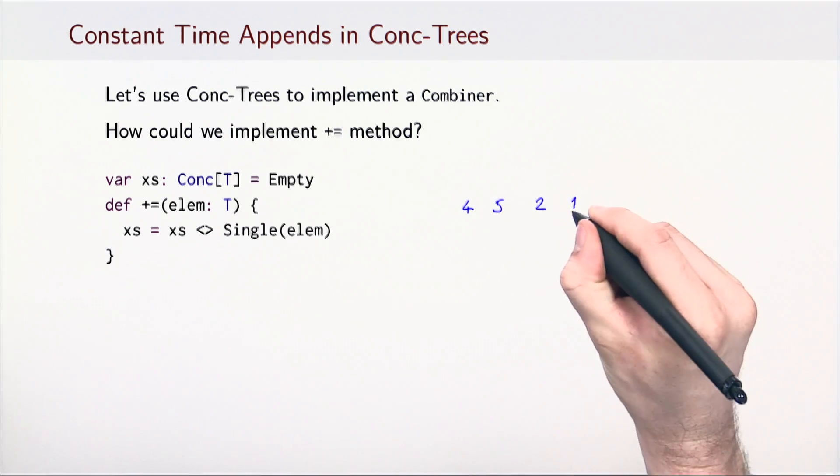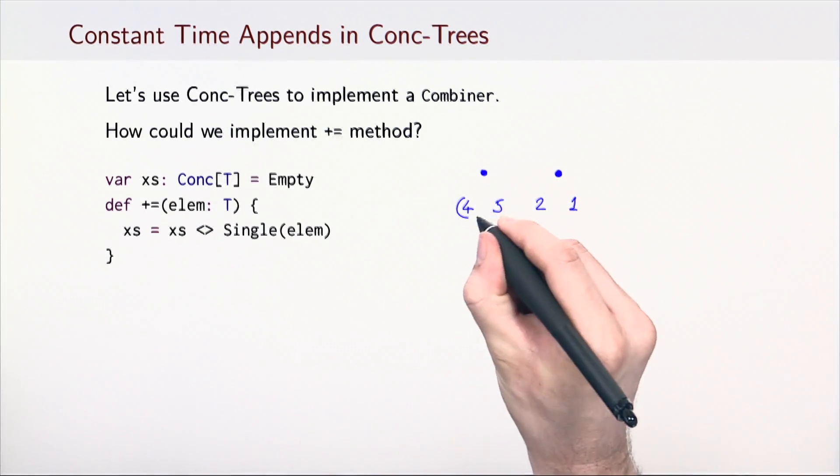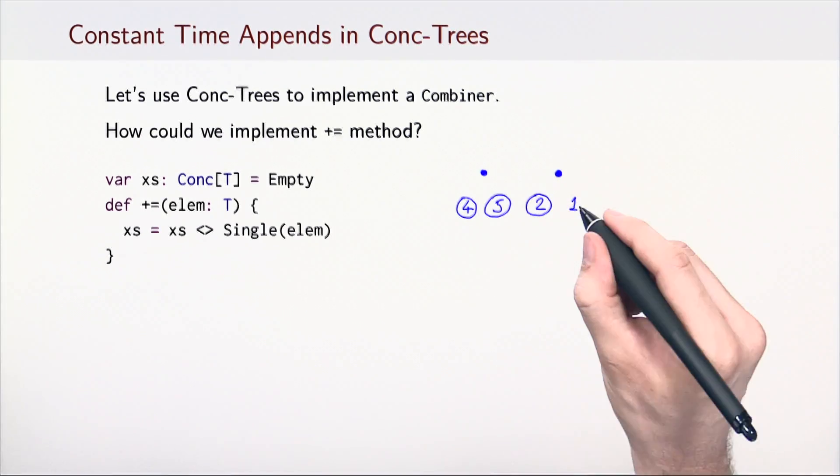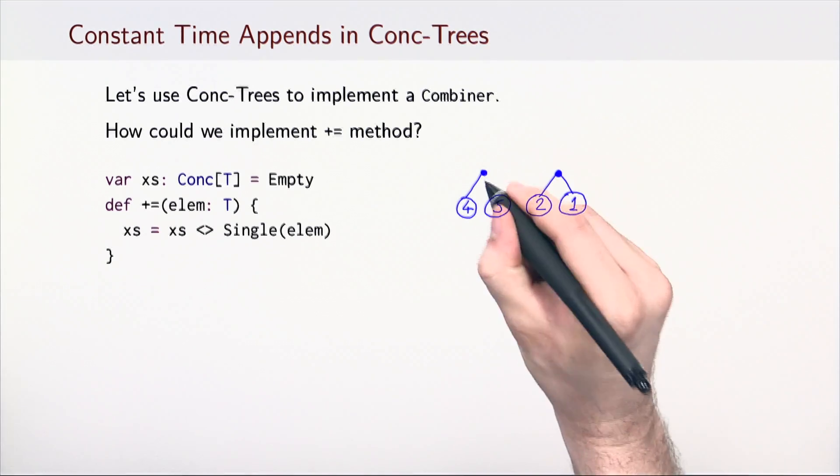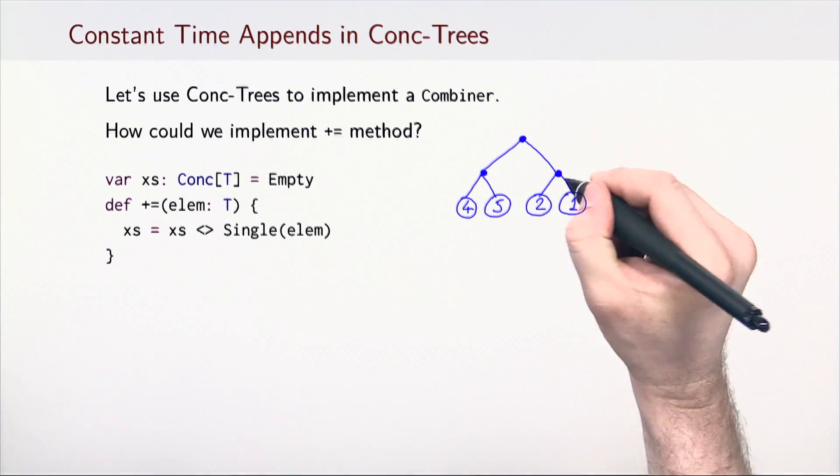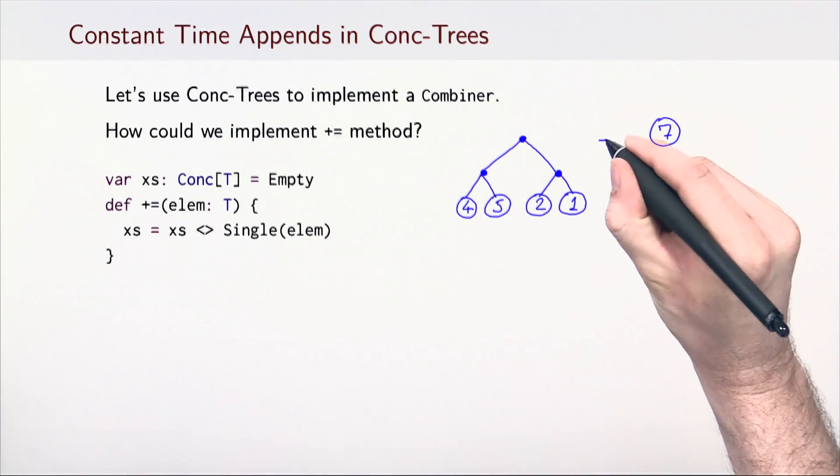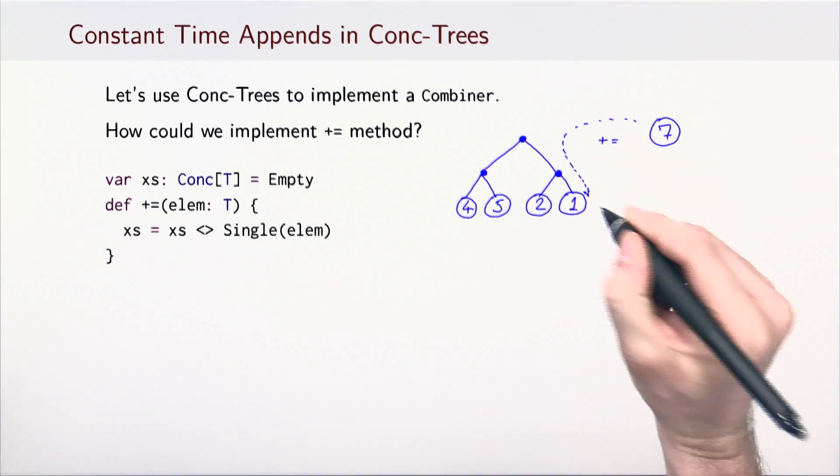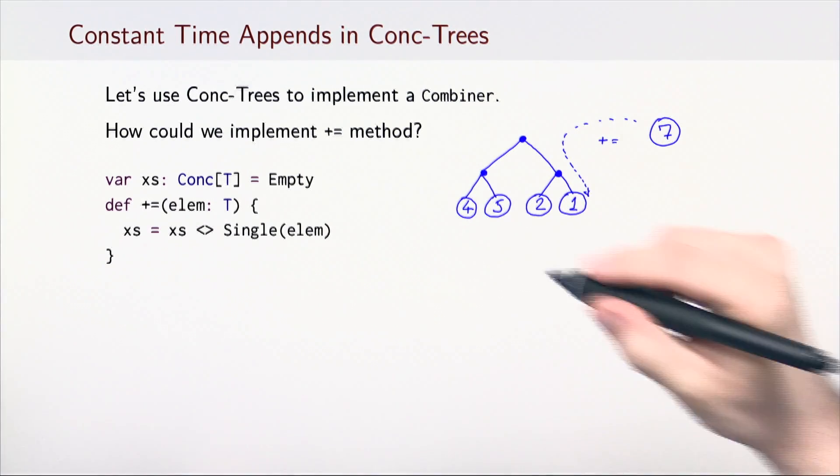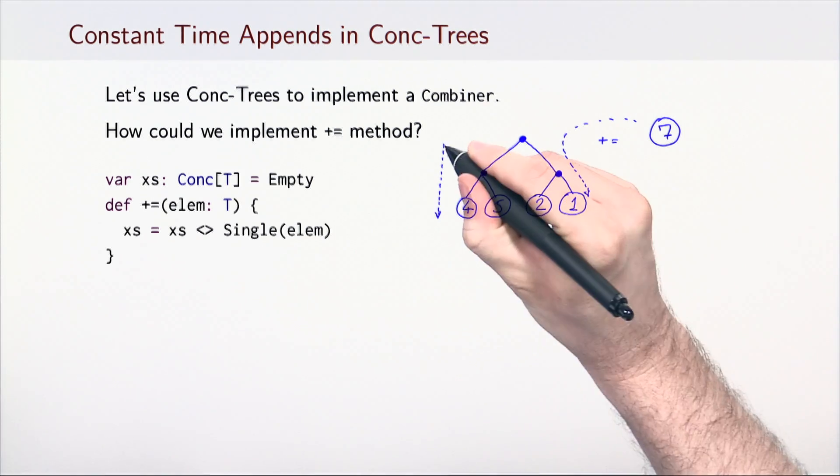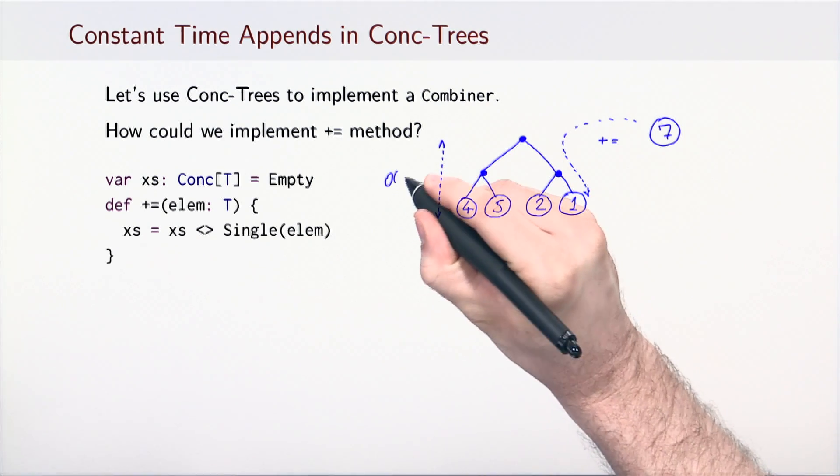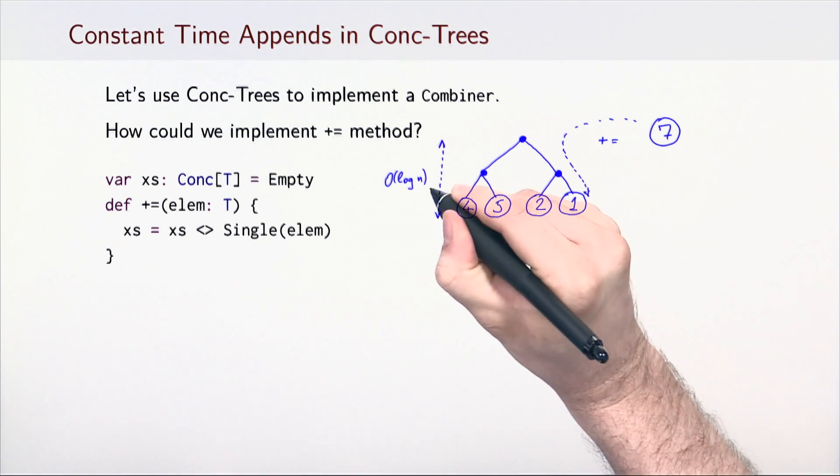Let's append the element 7 as a single tree. To append the single tree of height 1 into the larger tree, we need to descend to one of its leaves on the right side and update the path from the root to that leaf. Since the depth of the tree is bound by O(log n), the running time of the plus-equals method would also be O(log n).